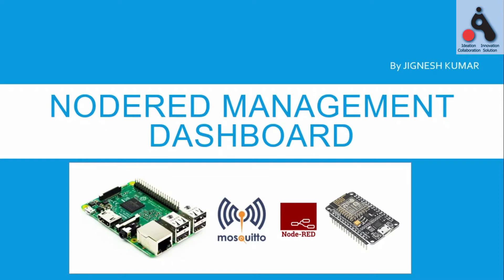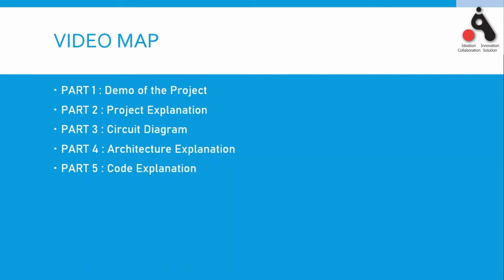The next slide is the video map — this video will be divided into five parts. In the first part we are going to see the demo and understand how this project works. The third part is the circuit diagram, the architecture explanation is the fourth part, and lastly we are going to explain our Arduino code for sending data from NodeMCU. On the Raspberry Pi side, we used some JavaScript code in Node-RED to get and parse that data into the correct format.